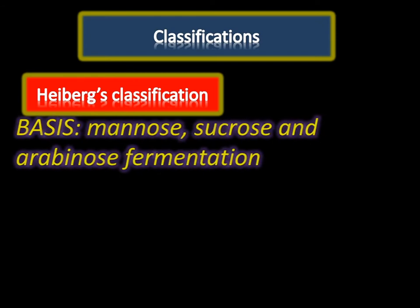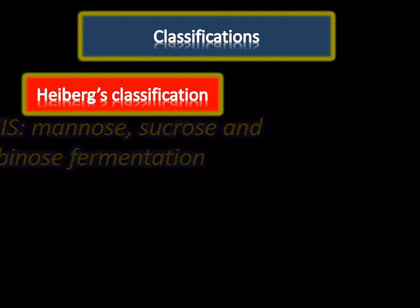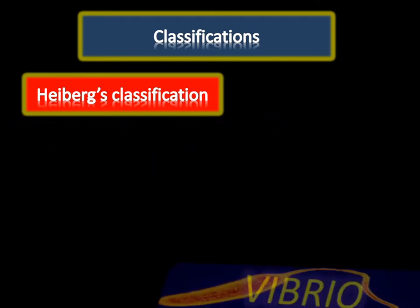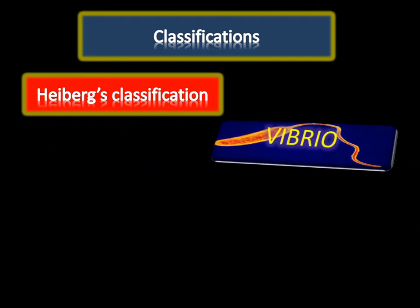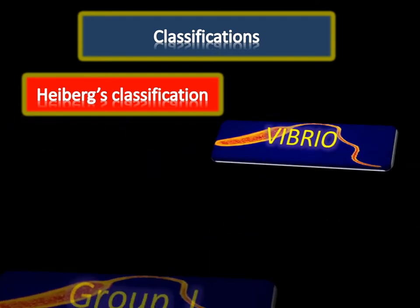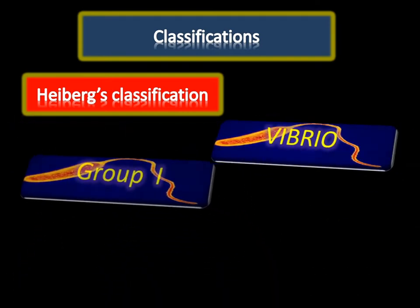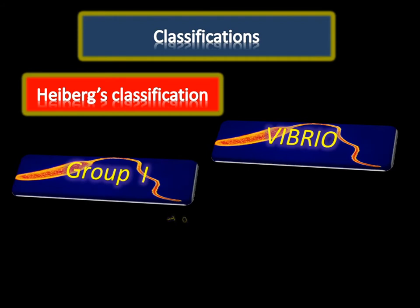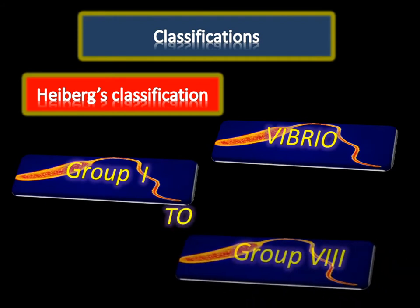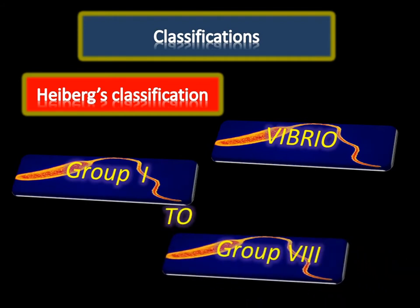Under Heberg's classification, the basis is fermentation of mannose, sucrose, and arabinose. It has been divided into eight groups from group 1 to group 8. Vibrio cholerae belongs to group 1.